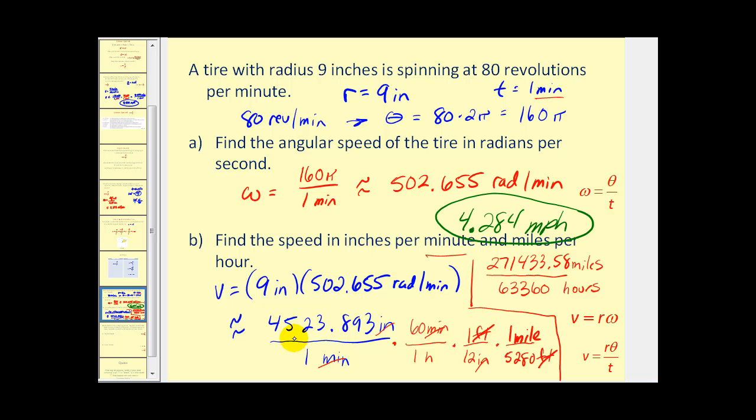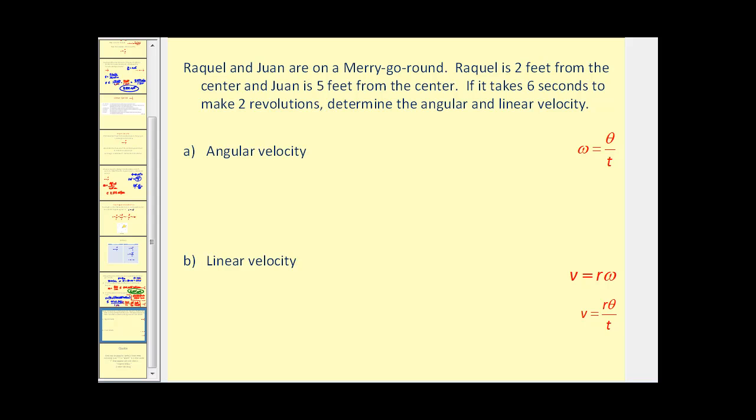Let's take a look at one more example. Raquel and Juan are on a merry-go-round. Raquel is two feet from the center and Juan is five feet from the center. If it takes six seconds to make two revolutions, determine the angular and linear velocity. For Raquel, the radius would be 2 feet and it's 5 feet for Juan. The time is 6 seconds. And we need to find theta. If it makes two revolutions, well one revolution would be 2π radians. So two revolutions would be 4π radians.